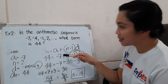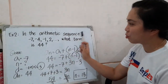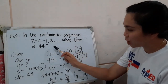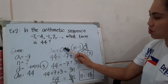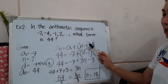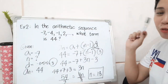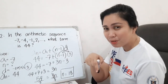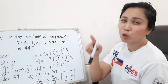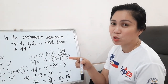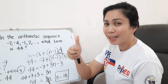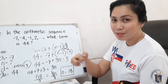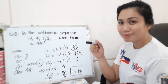That's how we solve this kind of problem in finding the nth term of an arithmetic sequence. Don't forget our formula: a_n = a_1 + (n - 1) × d. If you have questions, please write them in the comment box below, and don't forget to subscribe to our YouTube channel and like. Thank you!